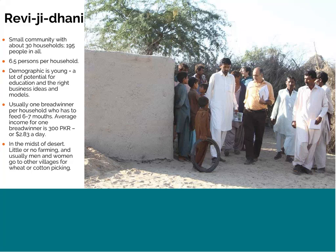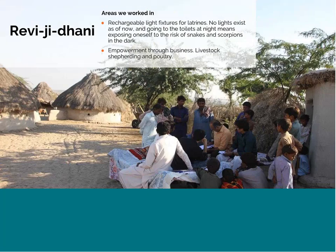The community was in the midst of the desert, with little or no farming. Men and women usually went to other villages for wheat or cotton picking. The areas we worked on included an energy solution, rechargeable light fixtures for latrines — since no lights existed and going to the toilet at night meant exposing oneself to the risk of snakes, scorpions, and other wild insects in the dark. We also saw the environment through business as a solution, and livestock shepherding and poultry as potential offshoot solutions thanks to our energy solution.